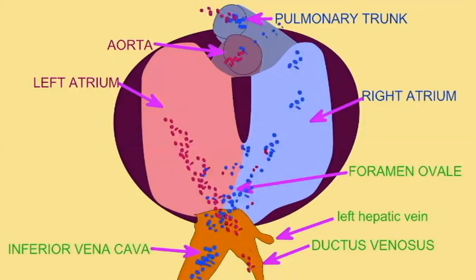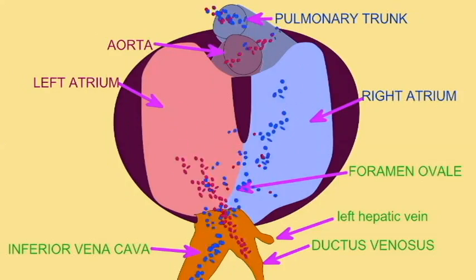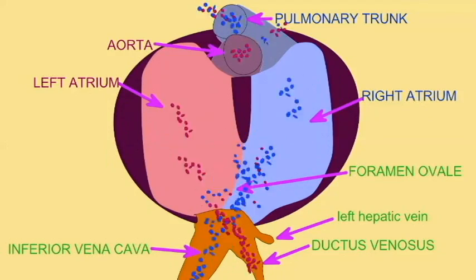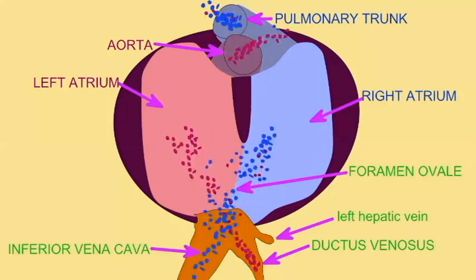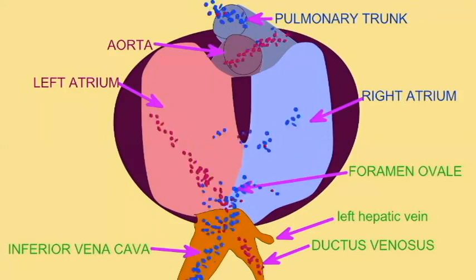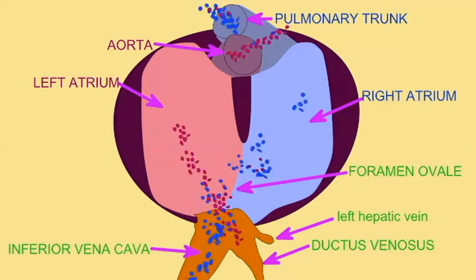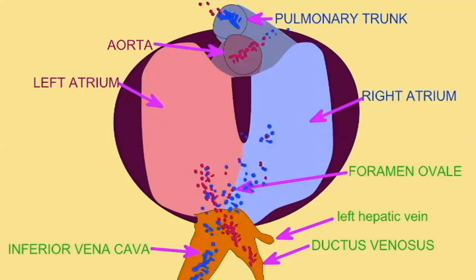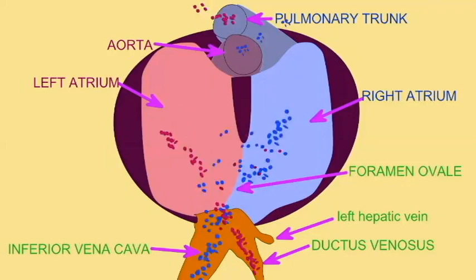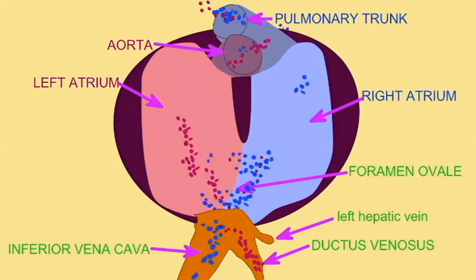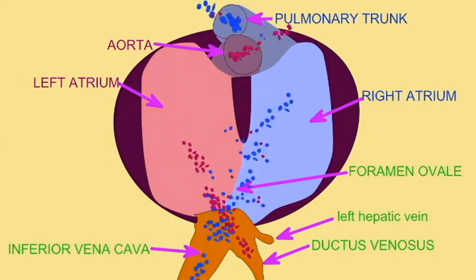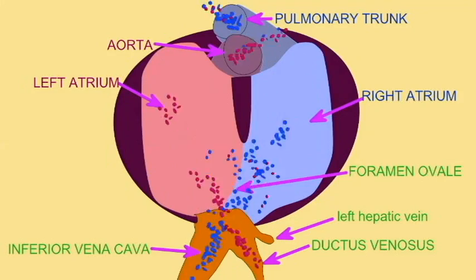However, the angle at which the ductus venosus empties into the inferior vena cava as it empties into the heart, combined with the increased velocity of this blood, ensures that the majority of its largely oxygenated blood will enter the left atrium as opposed to the right atrium. Thus, the two separate streams of blood head in largely opposite directions, although there is some mixing, and the aorta possesses blood which is far more oxygenated than the blood which passes through the pulmonary trunk.